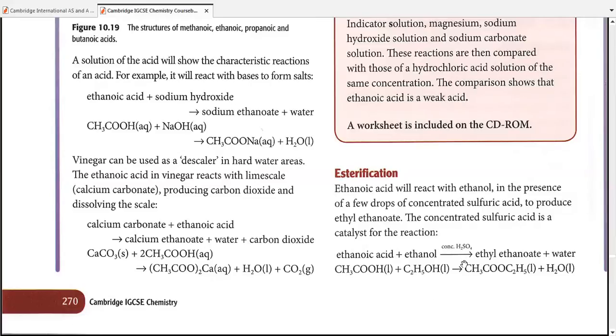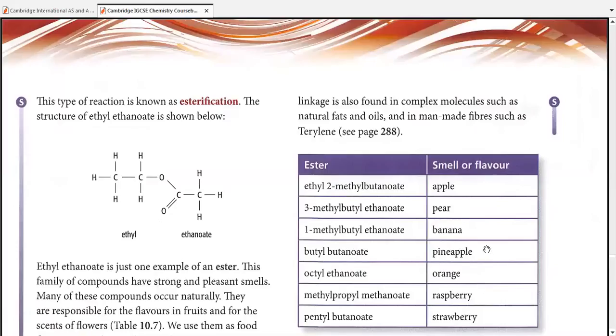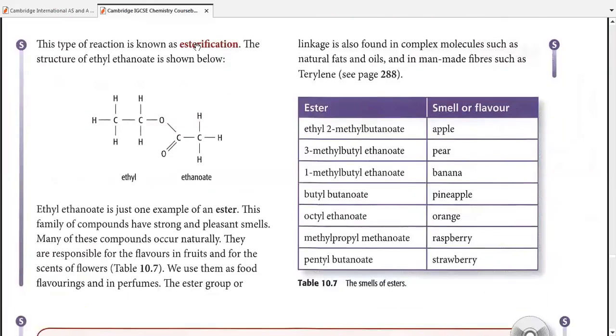We'll discuss this reaction a little later, but don't forget the concentrated H2SO4 is acting as a catalyst here. This type of reaction is known as esterification. The structure of ethyl ethanoate is shown below. The ethyl part comes from the alcohol, while the ethanoate part comes from the acid. I'll clear that out later using a chem-draw file.